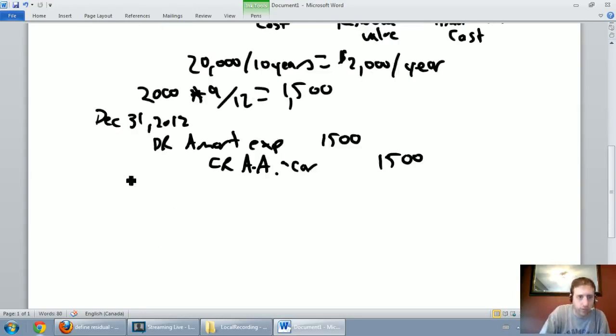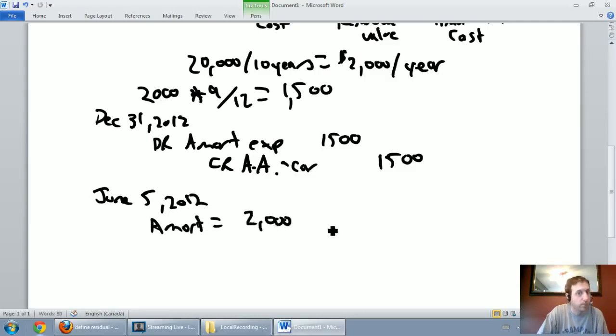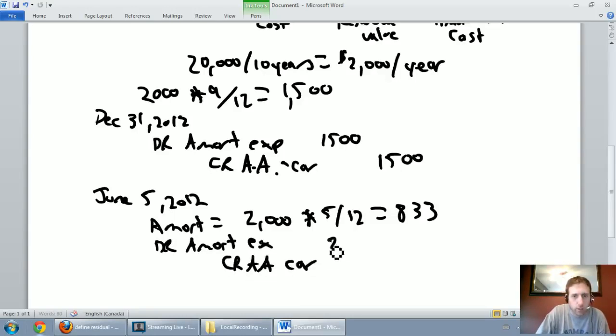So on June 5th, 2013, I need to amortize this asset, my amortization here is going to be, it would be $2,000 if it was a full year, but I didn't get a full year in, I only got five out of 12 months. I'm going to need my calculator for this one, I can see it's going to be a .333 type of answer. $2,000 times five divided by 12 is, yeah, $833.33. So $833, we'll round to the dollar here. So let's do our amortization again, it's debit amortization expense, credit accumulated amortization on the car for $833.